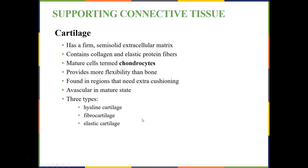We have bone and cartilage as our supporting connective tissue. Cartilage is a semi-solid connective tissue produced by chondroblasts — the baby cartilage cells that produce a cartilage matrix. Chondrocytes are the adult cartilage cells that maintain that matrix. There are three types of cartilage: hyaline cartilage, fibrocartilage, and elastic cartilage. All three are avascular, so they gain their nutrients from the environment and tissues surrounding them.